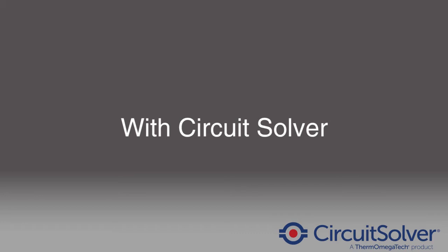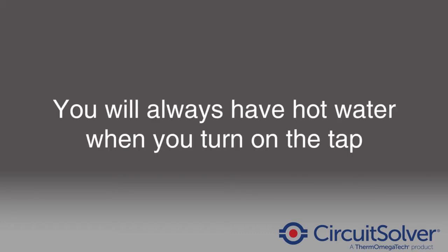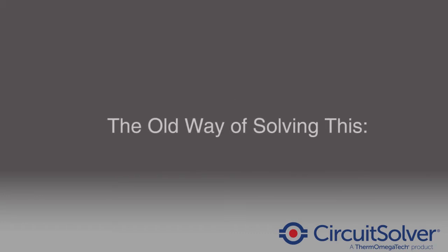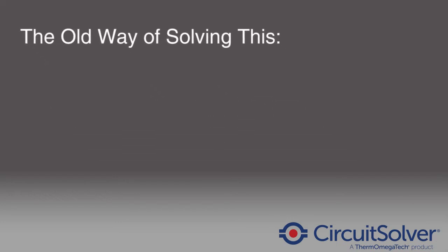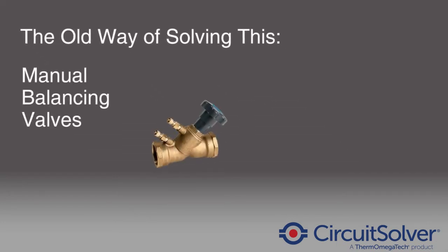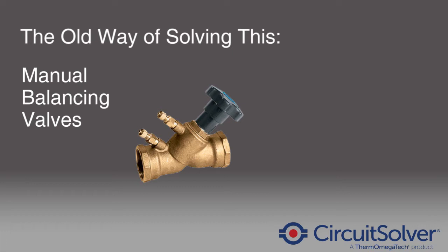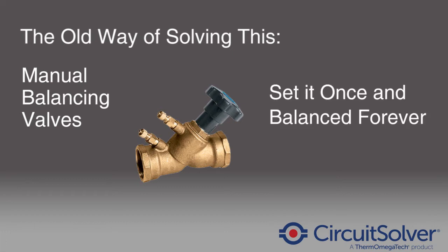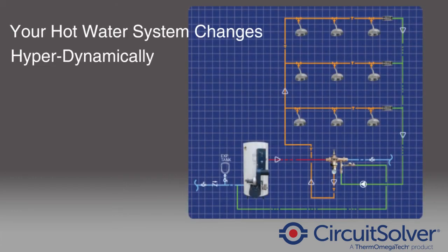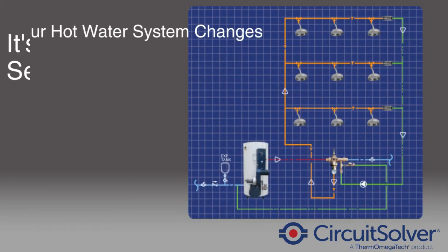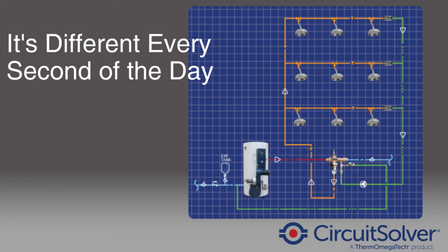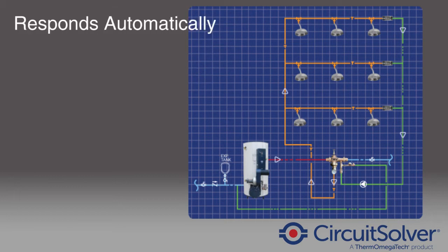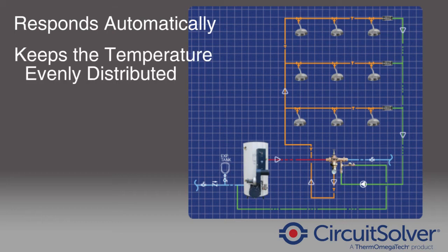When you use CircuitSolver, you will always have hot water when you turn on the tap. With manual pressure differential balancing valves, it's thought that if you set them once, the job's done forever. It's just not that simple. Your hot water system changes hyper dynamically and is different every second of the day. CircuitSolver automatically responds to those flow directional needs and will keep the system's temperature evenly distributed all the time.